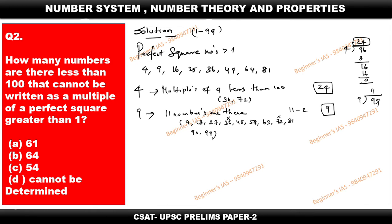Now check multiples of 16. All multiples of 16 — such as 16, 32, 48, 64 — are already present in the multiples of 4. Therefore, to avoid double counting, we take 0 new multiples from 16.